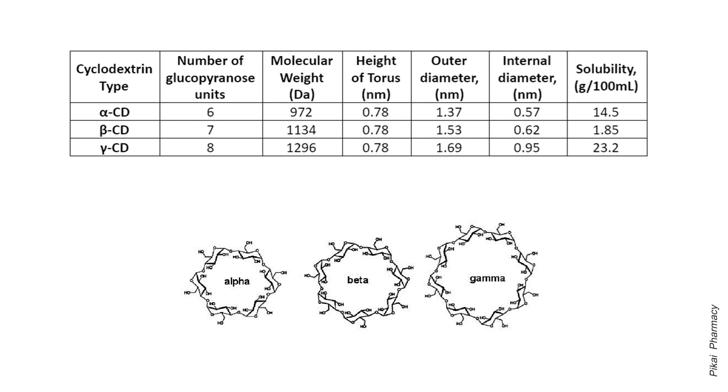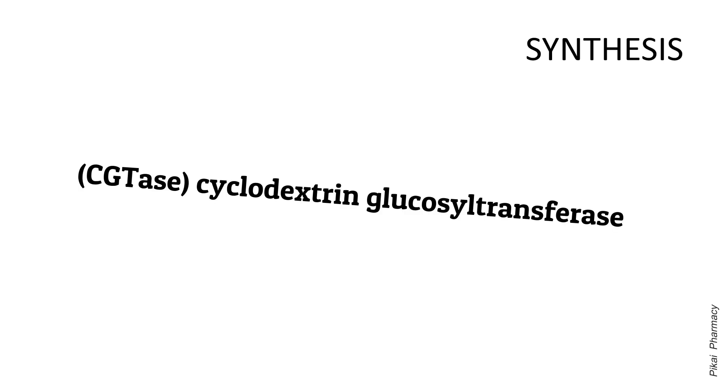When it comes to the synthesis of cyclodextrins, it is commonly done by CGTase enzyme, that is cyclodextrin glucosyl transferase, along with α-amylase. In the synthesis process, first the starch is liquefied by heat treatment or by using α-amylase. After that, CGTase enzyme is added for enzymatic conversion.